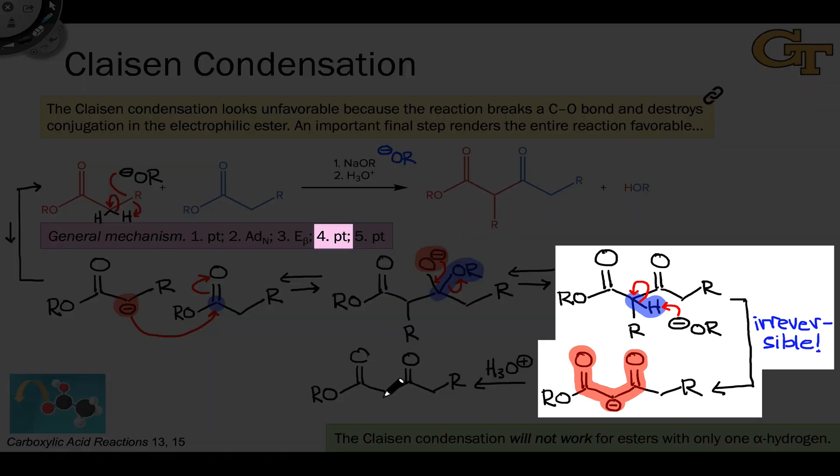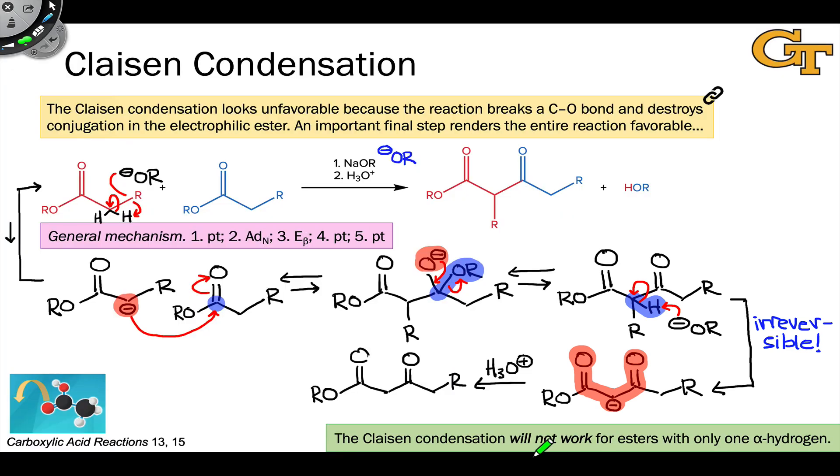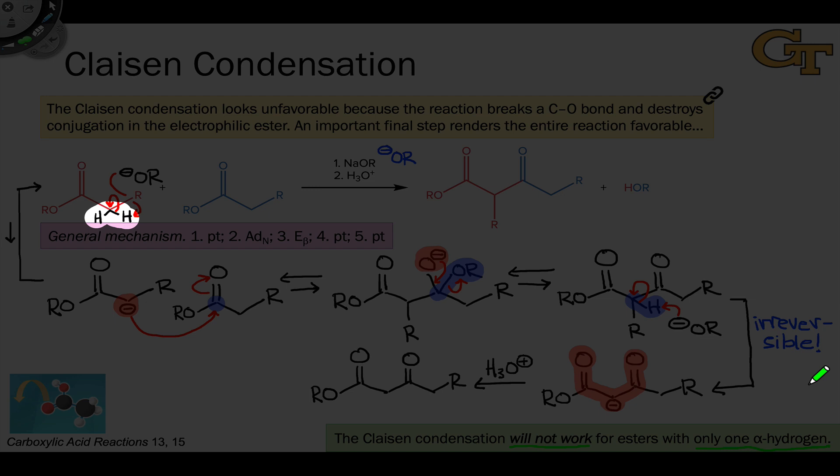Because it's that fourth step, the proton transfer, that really drives this reaction forward, the Claisen condensation will not work for esters with only one alpha hydrogen. Even though we can remove that alpha proton to form an enolate, the enolate will not go completely to beta-ketoester product. Keep this in mind because it's a key constraint on the Claisen condensation: our nucleophile must have at least two alpha hydrogens.